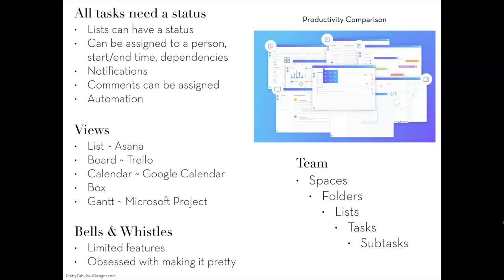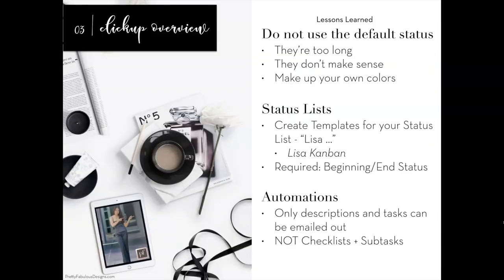The hierarchy in ClickUp goes: teams, then spaces, then folders, then lists, then tasks, and subtasks. A couple things I've learned: don't use the default status — there are too many and it takes forever. Also make up your own colors. For me, idea is blue, in progress is bright pink, and done is green. Decide your colors right now before we get in there.